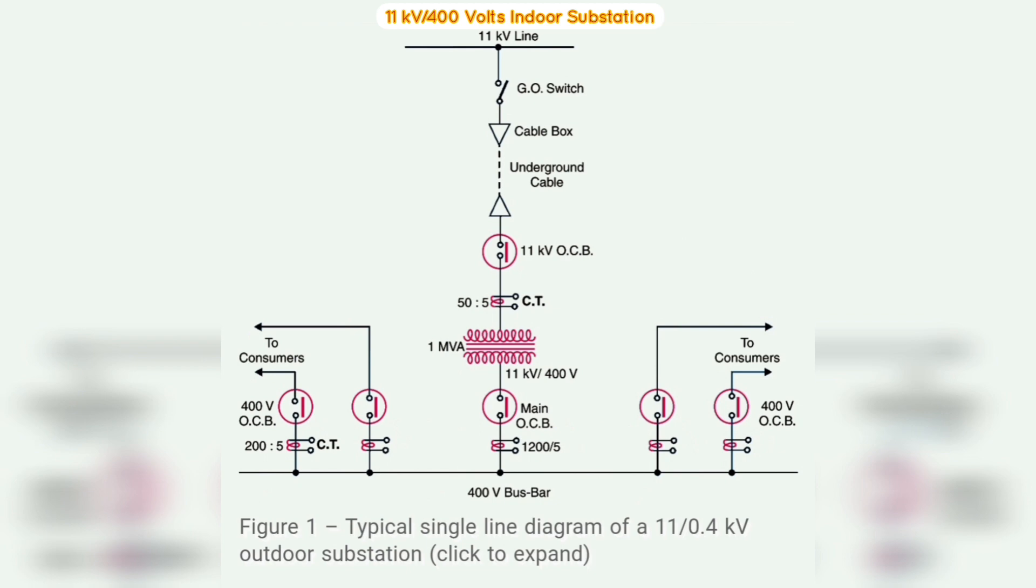The voltage between any two phases is 400 volts, and between any phase and neutral it is 230 volts. Next, we learn about the single-phase residential load is connected between any one phase and neutral, whereas three-phase 400 volt motor load is connected across three-phase lines directly.